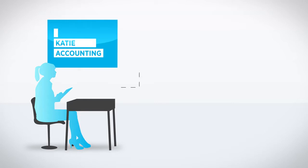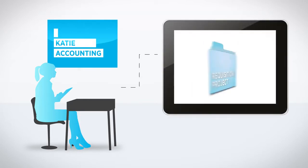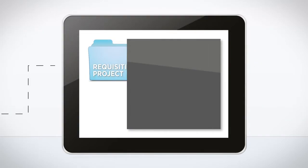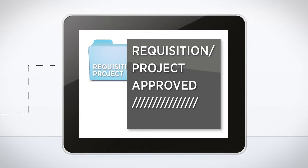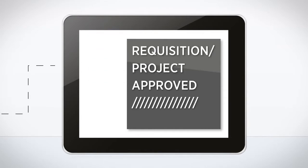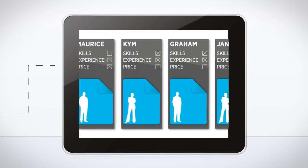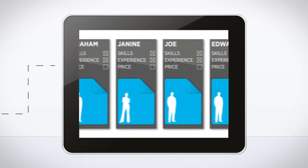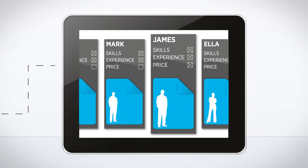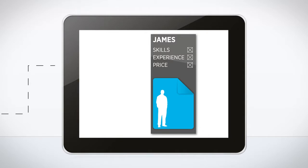Say Katie in accounting wants a temp. She just creates a requisition, waits for approval, then the requisition is delivered to staffing vendors who send CVs of qualified candidates or bids for her to review. She'll assess skills, experience, and prices to choose James, the best person for the job.